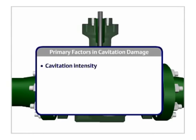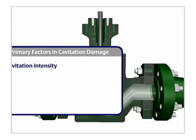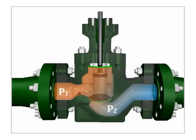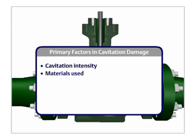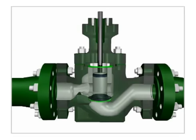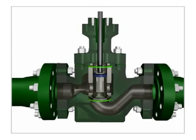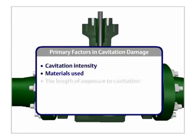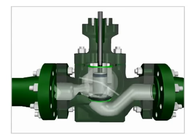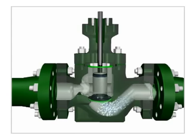The intensity of the cavitation. Greater drops in pressure increase the potential for damage. The materials used in the construction of the area where the cavitation occurs. Hardened materials reduce damage. The length of exposure to cavitation. The more frequently that cavitation occurs in an area, the more likely it is to sustain damage.